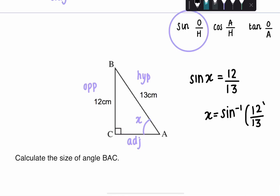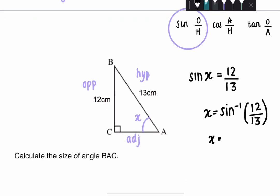So on your calculator, you can find the inverse of sine, which is this. And then you have to press shift and press the sine, and this thing will come up. And then put 12 divided by 13. And you get that X is equal to 67.3 degrees.